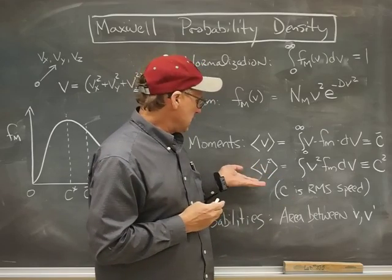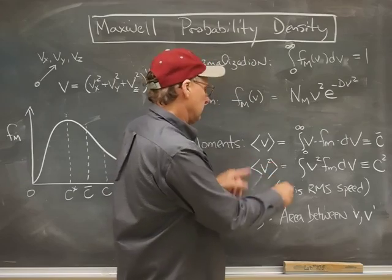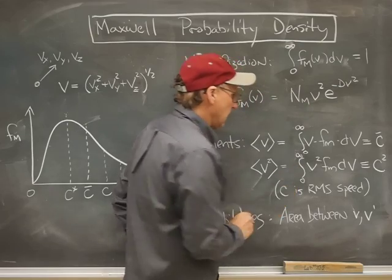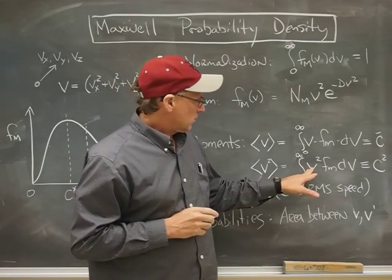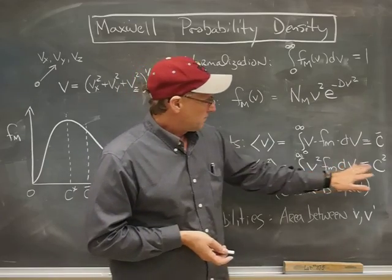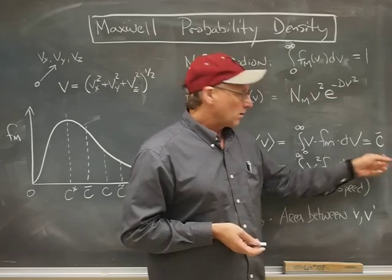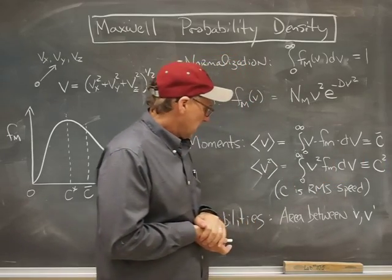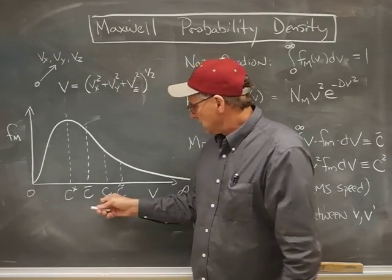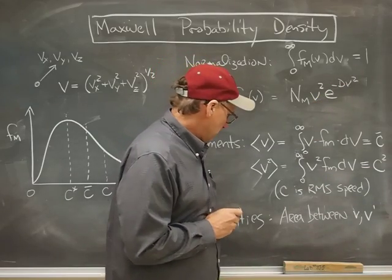How about the mean of the square of the speed? That means the mean. That inside means the square of the speed. Well, I integrate from zero to infinity, but I multiply v squared times the Maxwell probability density. And now, the mean of the square is, therefore, would be called C squared. If I take the square root of that quantity, I get C, which is the RMS speed. That's that quantity right there. And so on for higher moments.